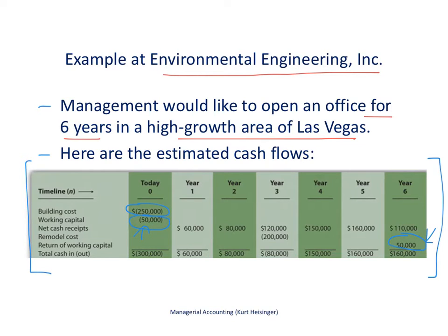So we'll pay out $50,000 today but we'll get it back in six years — that's part of our cash flow analysis. We expect net cash receipts of about $60,000 in year one and about $80,000 in year two, going up over time. We also expect to remodel the office after about three years at a cost of $200,000. The summary row shows net cash flows per period: $300,000 outflow at the start, $60,000 in year one, $80,000 in year two, a net outflow in year three due to the remodel, and so on.